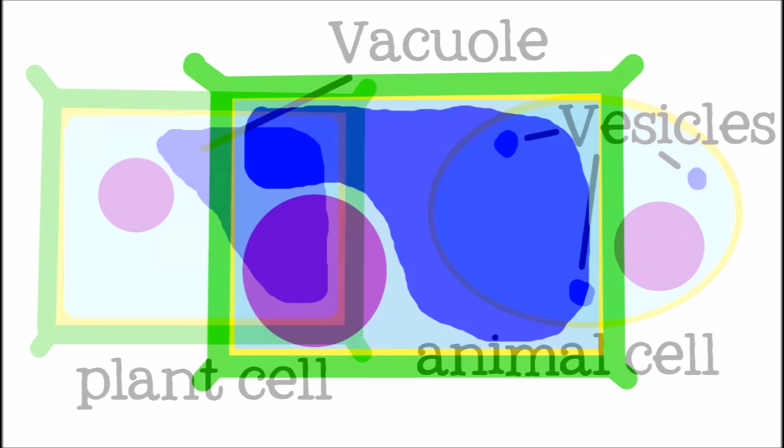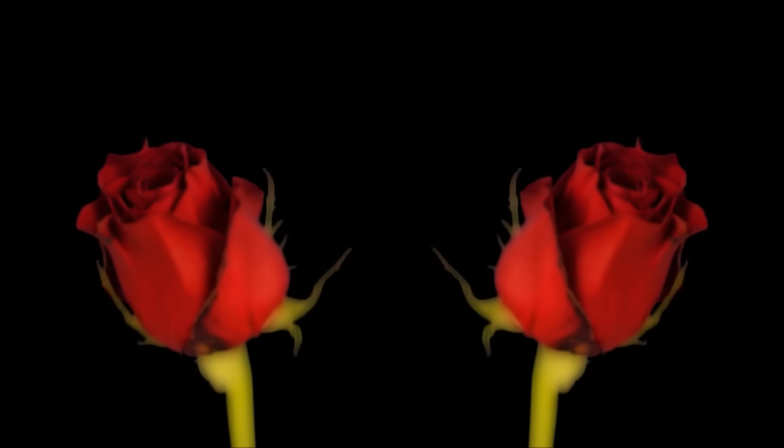Vacuoles are often the largest organelle in a plant cell, and when plants do not get enough water, their vacuoles shrink and the plant begins to wilt.